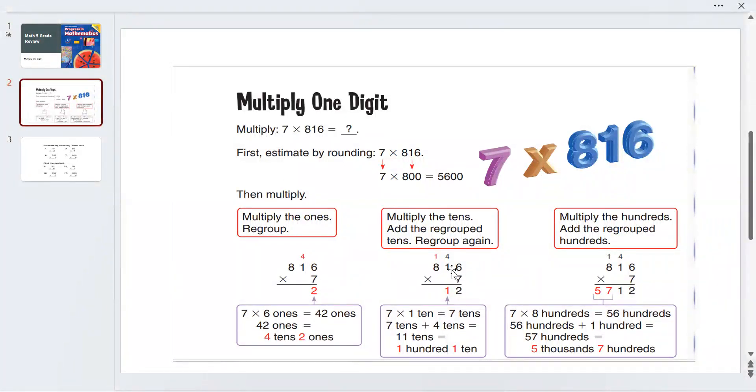Then 7 times 1 is 7, plus 4 is 11 tens. We write 1, and 1 hundred goes up. Because 11 tens is 1 hundred and 1 ten, we write 1 ten and 1 hundred.